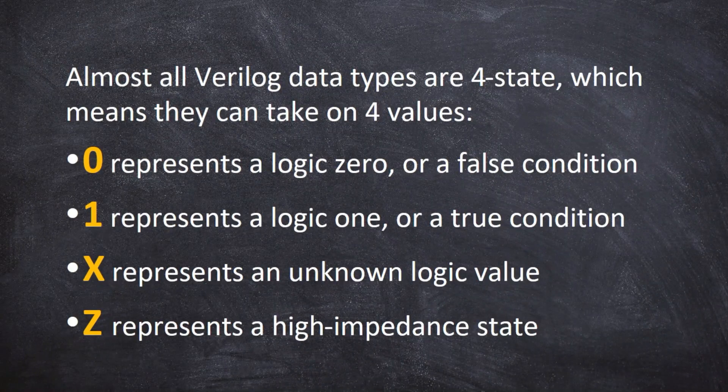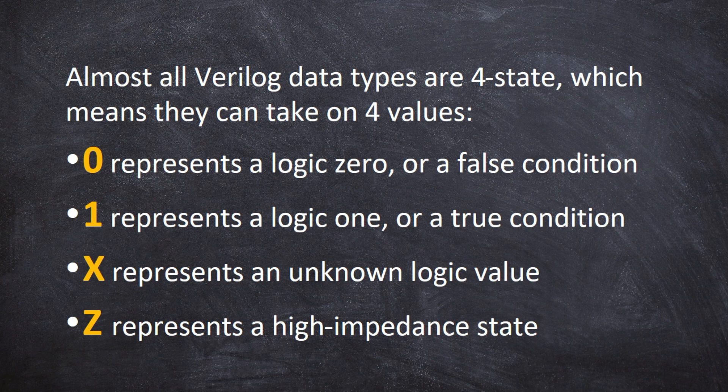Almost all data types have four states, which means four values. The four values are 0, 1, x and z. 0 represents logic 0; 1 represents logic 1, which is the true condition; x is an unknown logic value; and z is the high impedance state, more generally known as a floating state.